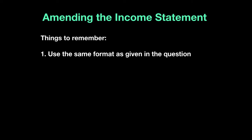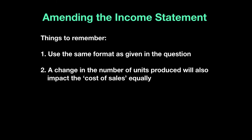Secondly, whenever there's a change in the number of units — say a company is producing 100,000 cell phones and now they want to produce 120,000 — whenever there's a change in units, you're selling more but that also means your cost of production is going to go up equally. So a change in number of units will impact cost of sales, the direct cost, and your revenue because you're going to be selling more as well. We will see that in one of the questions.